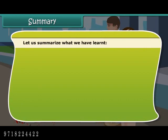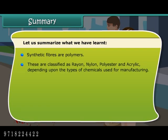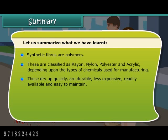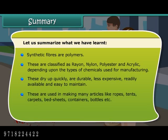In summary: synthetic fibers are polymers, classified as rayon, nylon, polyester, and acrylic, depending upon the types of chemicals used for manufacturing. They dry up quickly, are durable, less expensive, readily available, and easy to maintain. They are used in making many articles like ropes, tents, carpets, bedsheets, containers, bottles, etc.